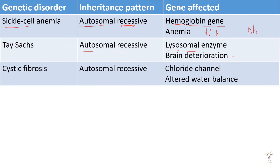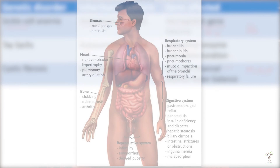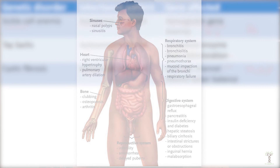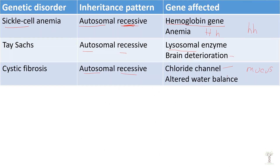Cystic fibrosis — autosomal and recessive. This is our chloride channel gene. It affects water balance and it causes an increase in mucus production. It most often affects the digestive system, the respiratory system, and sweat glands. But there are a myriad of different kinds of symptoms that people can have with this disease.